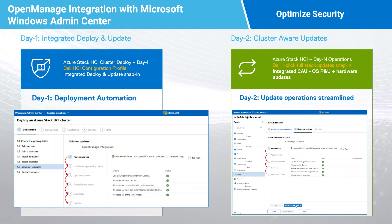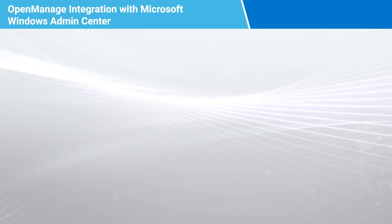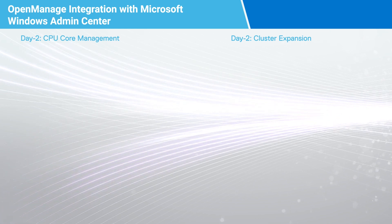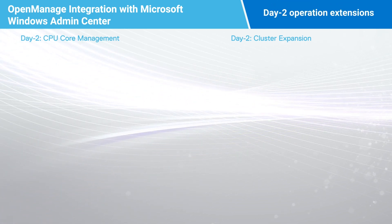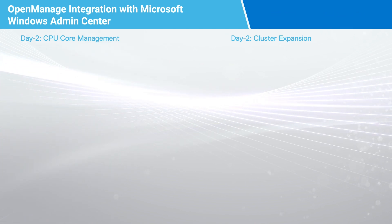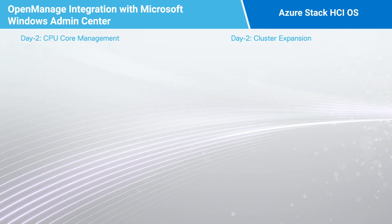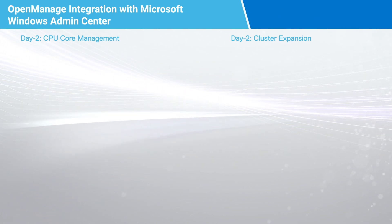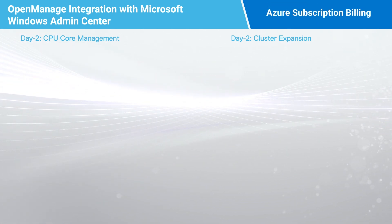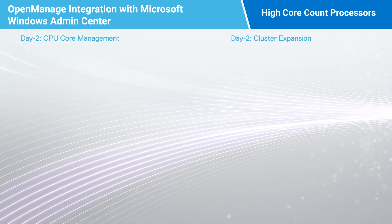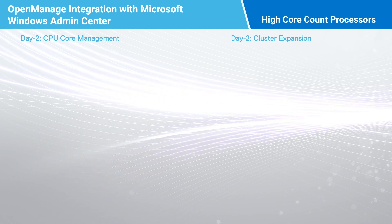CPU core management and cluster expansion snap-ins are also very important day two operation extensions for Windows Admin Center. As you know, Azure Stack HCI OS costs $10 USD per physical core per month for an Azure subscription. This can obviously get very expensive with the high core count processors available today.